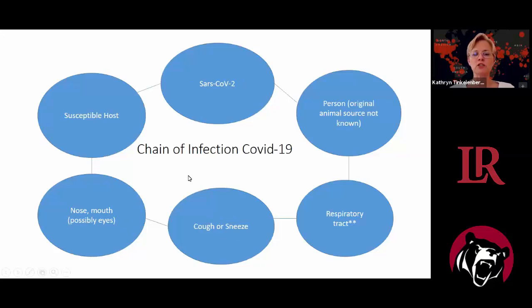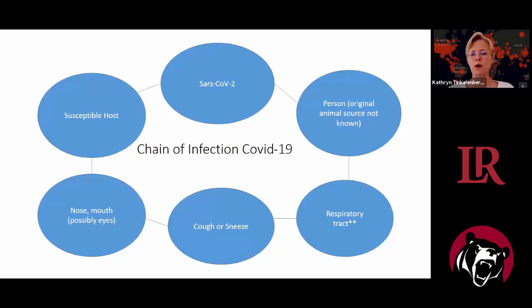Here is the chain of infection for COVID-19. SARS-CoV-2 is the virus. It probably originated in animals, but now people are the reservoirs. The portal of exit is from the person's respiratory tract — though there have been questions about whether it may also be present in feces, as traces of the virus have been found there. But for most people, it exits via the respiratory tract.